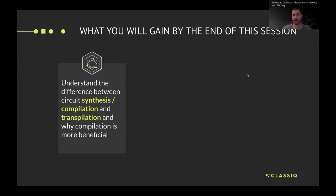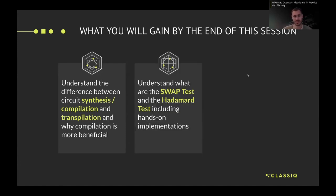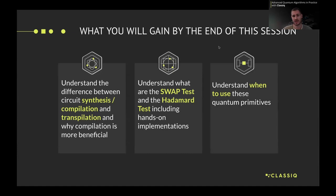This is a topic from the first session I want to touch on following the homework assignment and questions from the Discord channel. Then I want you to understand what the swap test and the Hadamard test are, including some hands-on implementations you will do in today's session and the homework assignment. You'll also understand when to use these quantum primitives. These will be the first two quantum primitives we'll see. Quantum primitives are small or common quantum algorithm building blocks, usually used as part of a larger quantum algorithm.